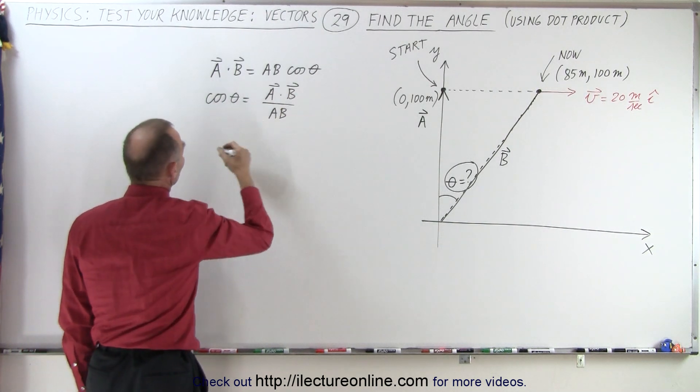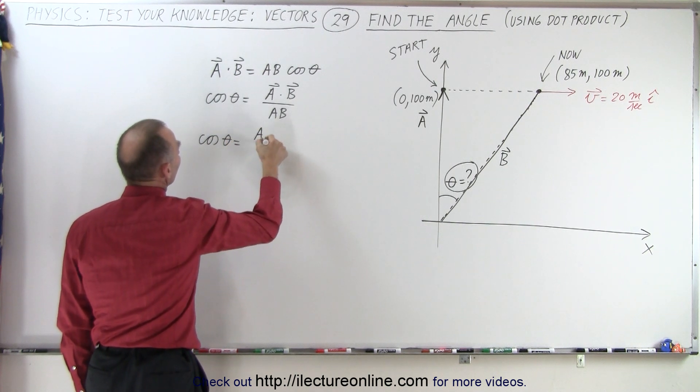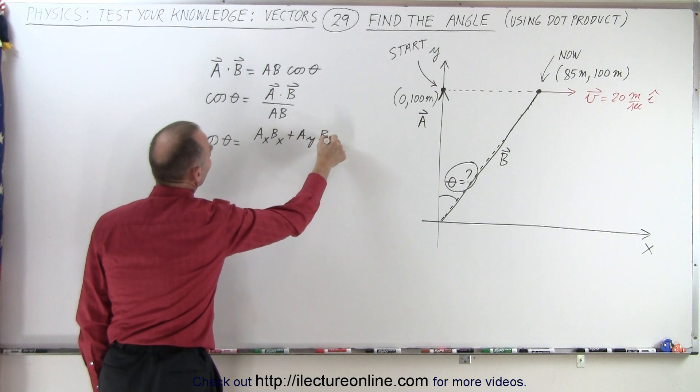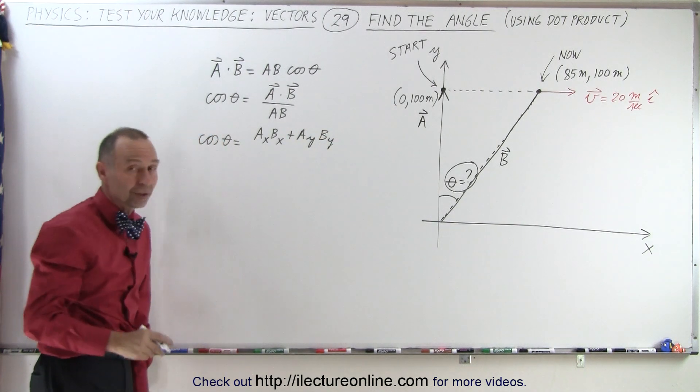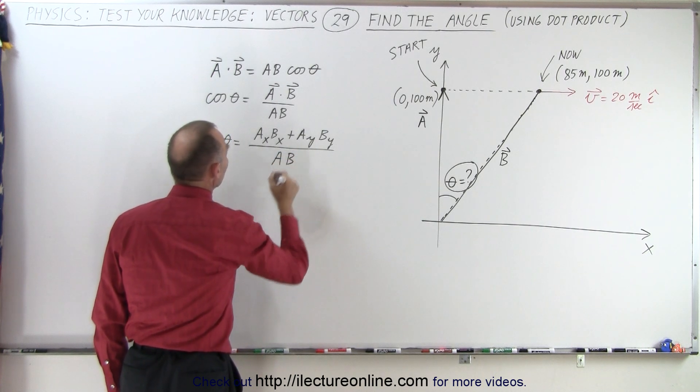But we're first going to write this as follows. This can be written as the cosine of theta is equal to a_x b_x plus a_y b_y. We only have to go for the first two dimensions because we don't have any z components, all divided by the magnitude of a times the magnitude of b.